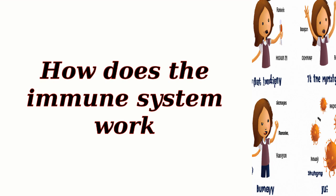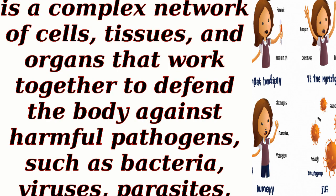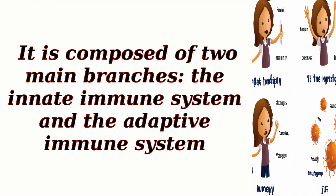How does the immune system work? The immune system is a complex network of cells, tissues, and organs that work together to defend the body against harmful pathogens, such as bacteria, viruses, parasites, and fungi. It is composed of two main branches: the innate immune system and the adaptive immune system.